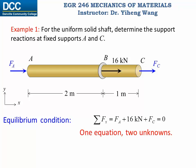However, here in the mechanics of materials course, we have one more condition we can use. Because this shaft has both ends fixed, it is not allowed to deform, therefore the total deformation — the displacement of end C relative to end A, delta C relative to A — must be zero. And this is known as the compatibility condition, which will provide us with an additional equation to help solve the two unknowns.